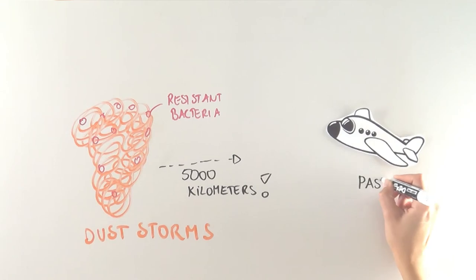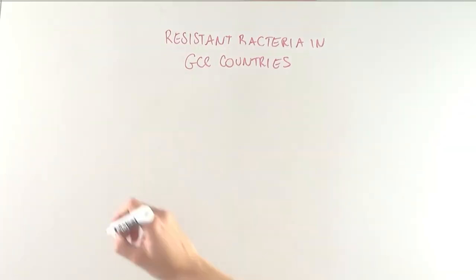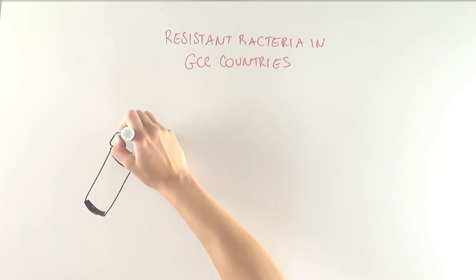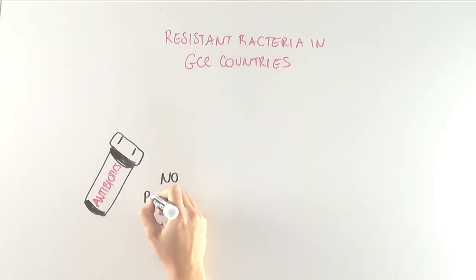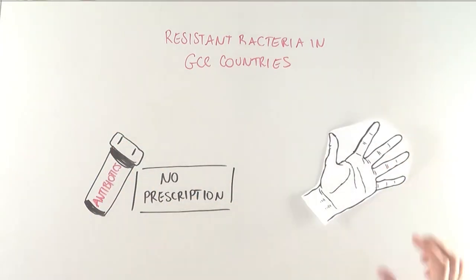These problems in the Gulf Cooperation Council countries are prevalent because antibiotics can sometimes be purchased without a prescription, and healthcare professionals and visitors often don't obey hand hygiene rules. This helps resistant bacteria spread.